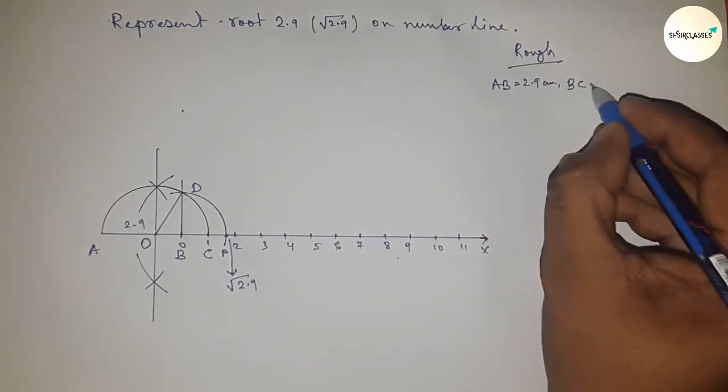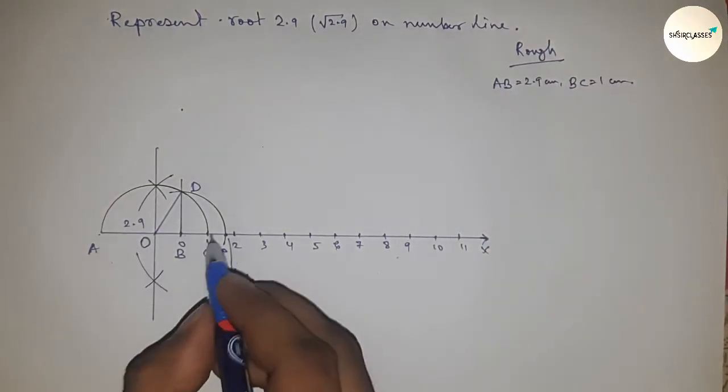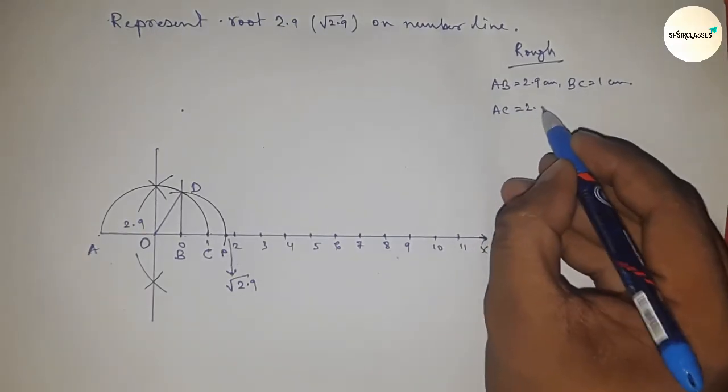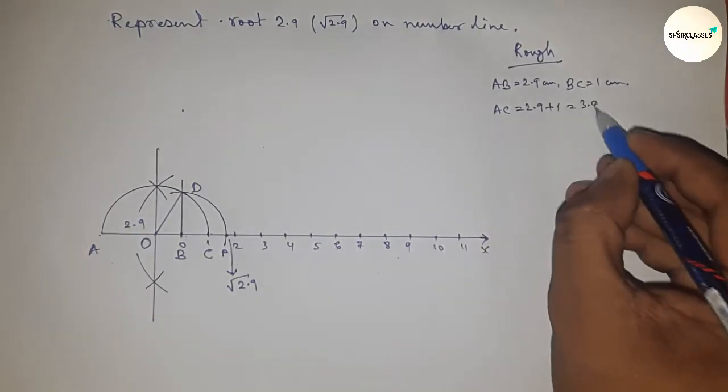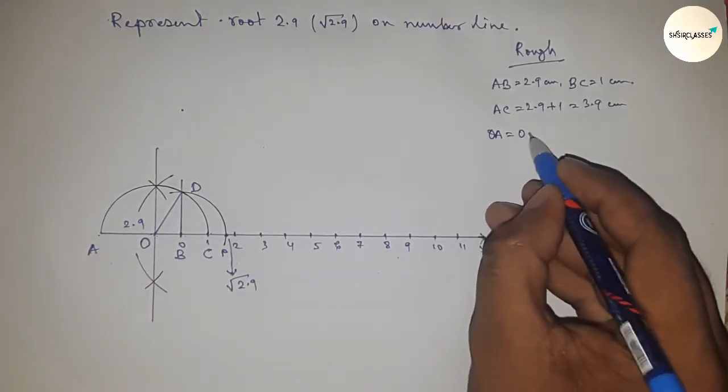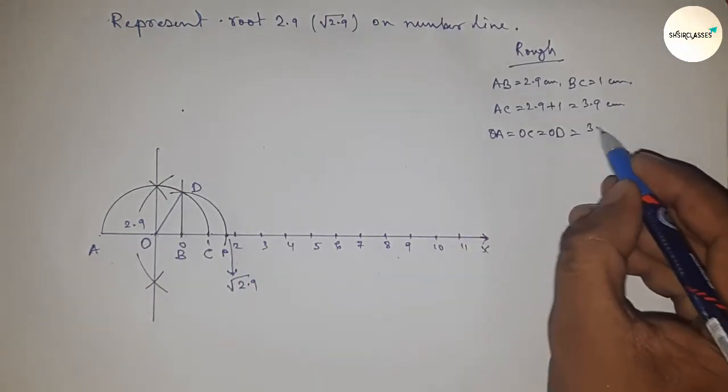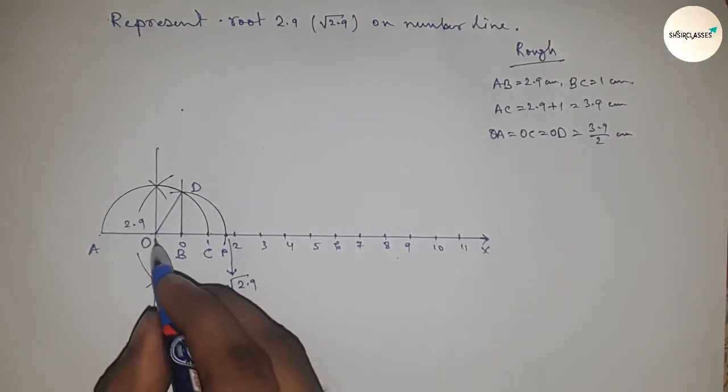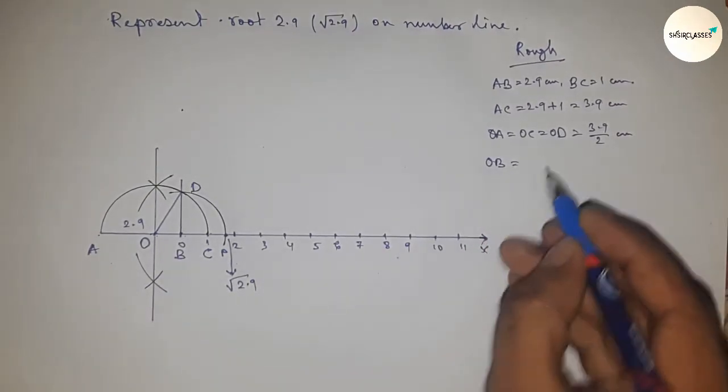Given: AB equals 2.9 centimeters, BC equals 1 centimeter. So AC equals 2.9 plus 1, which equals 3.9 centimeters. Now the radius OA, OC, and OD equal 3.9 divided by 2.